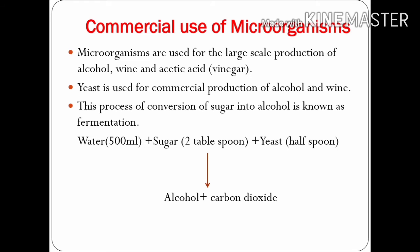The process of conversion of sugar into alcohol is known as fermentation. To understand how alcohol is prepared, you can perform an activity: take 500 ml water, add 2 tablespoons of sugar, stir it well, then add half a spoon of yeast. Leave it covered in a warm place for 4 to 5 days. After 4-5 days, smell it — you may notice the smell is a little different, and that is the smell of alcohol. Carbon dioxide gas would also be released from it.